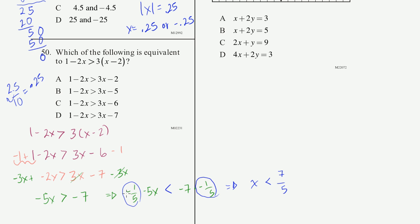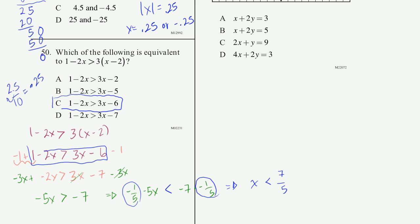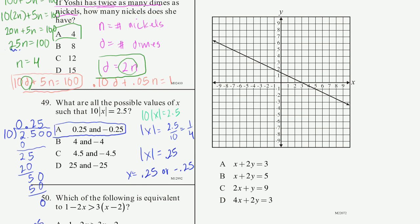It turns out the answer choices only required the first step — distributing the 3 to get 3x − 6 — without changing the left side or the inequality. So all we had to do was pick choice C right there. The lesson: look at the choices before proceeding with the full problem — the very first step got us to the answer.